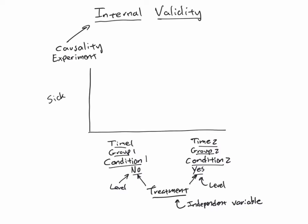So in the time-based case, we would be giving the treatment or not giving the treatment to people at time one and measuring how sick they are — and maybe we see that they are this sick. Then we give them the treatment, we measure them at time two, and we see that they are less sick. And so the idea is, because of this difference, the people are less sick — we would like to say that we caused them to be less sick, that the treatment caused them to be less sick, and that the treatment is what is responsible for that difference.